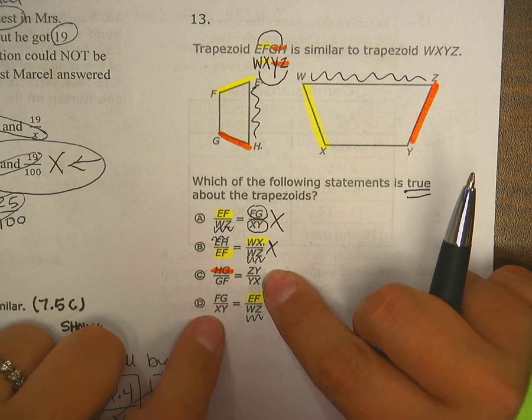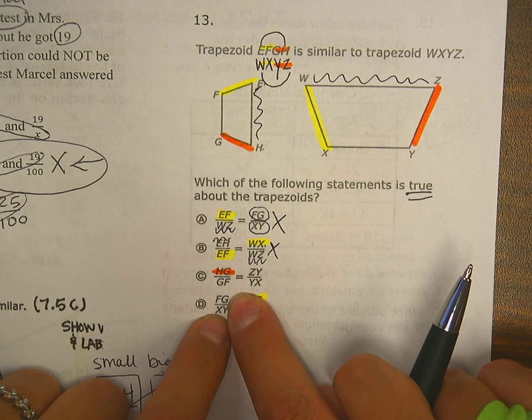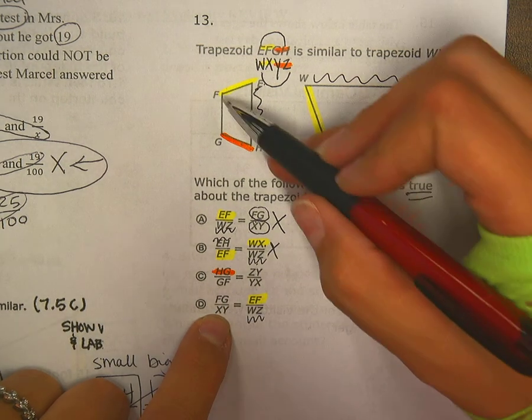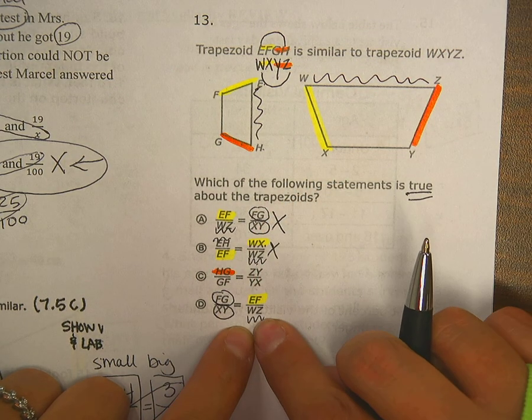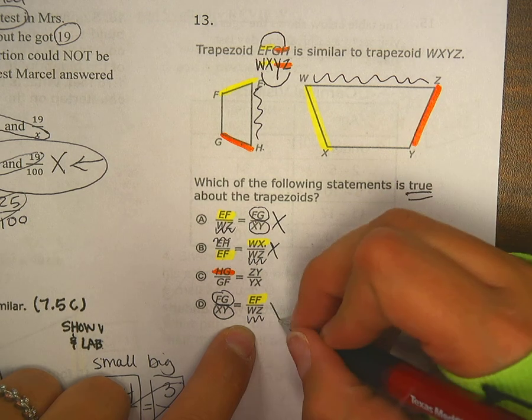All right, let's look at this one. I bet you this one's right. So I've got FG. FG is blank, so that's good. And XY is blank. Oh man, and then we have squiggly, so that doesn't work out.